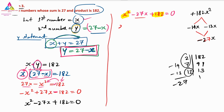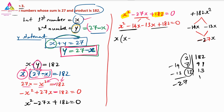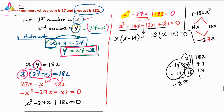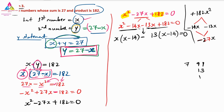So X squared minus 14X minus 13X plus 182 equals 0. Grouping: X(X minus 14) minus 13(X minus 14) equals 0. Taking (X minus 14) common: (X minus 14)(X minus 13) equals 0. This is the most important step — if you have not understood, ask me quickly.